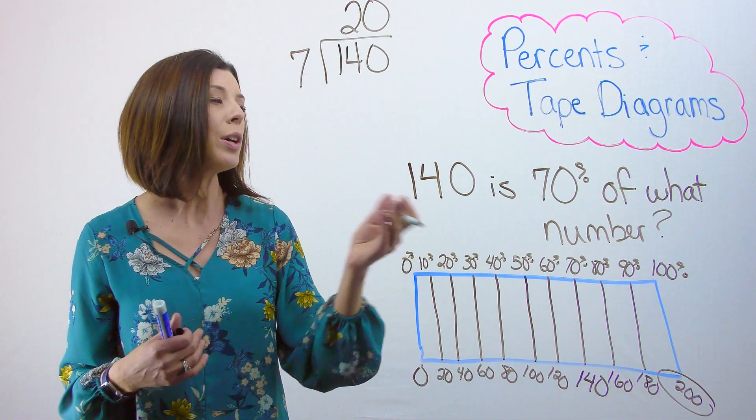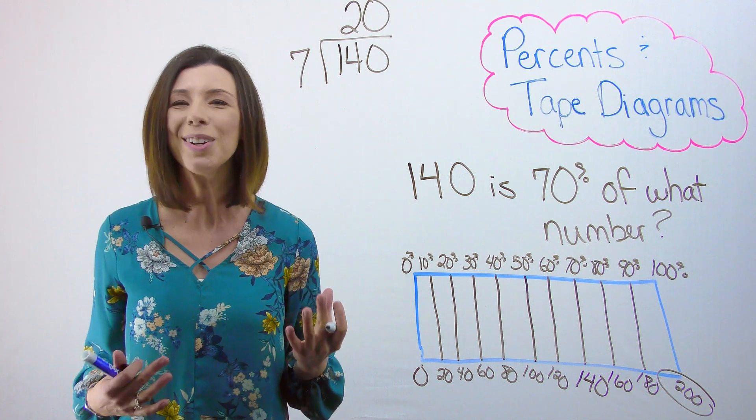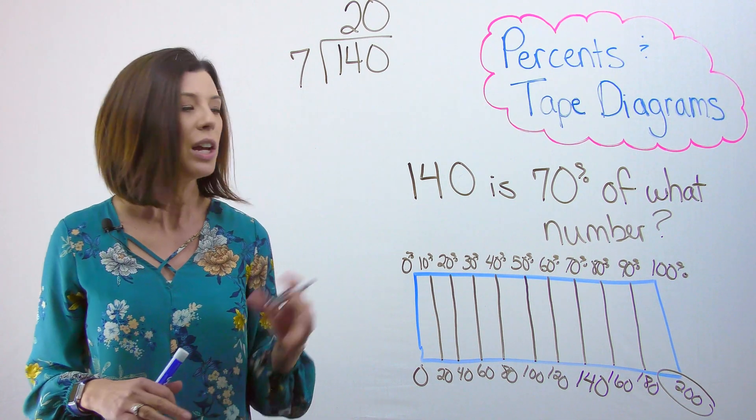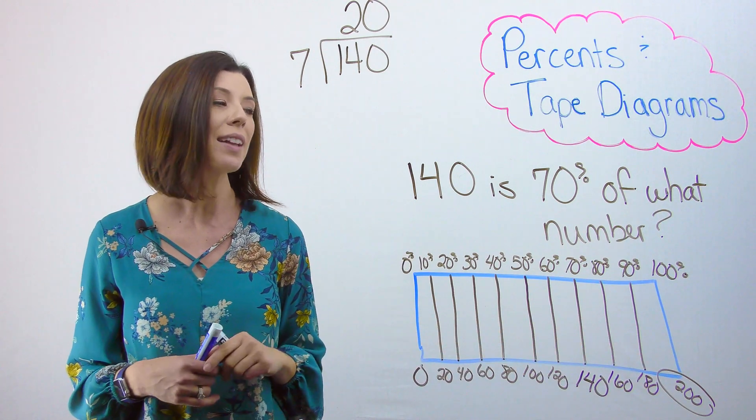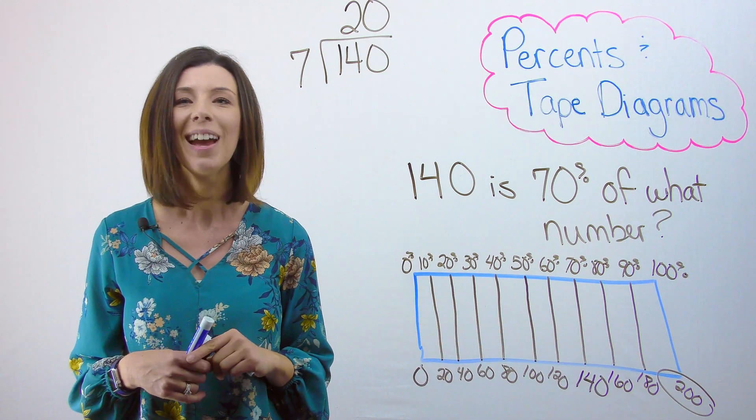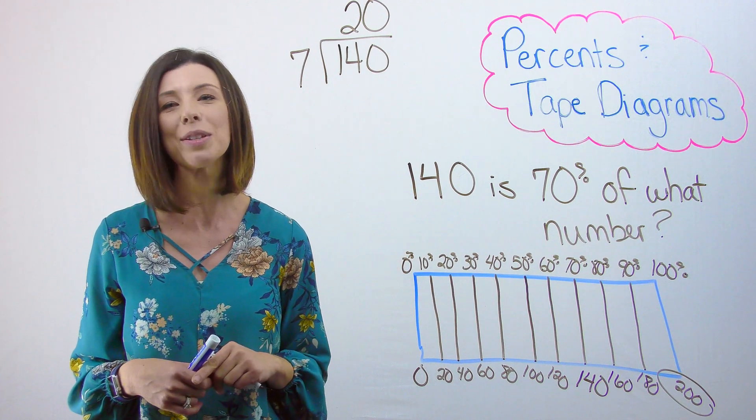Since I know that my question is asking, 140 is 70% of what number? I know that I'm looking for the whole in this case. So my answer would be 200. 140 is 70% of 200. I hope you found this video helpful and you can use a tape diagram to solve this problem in the future.